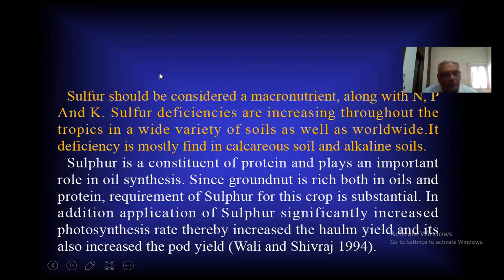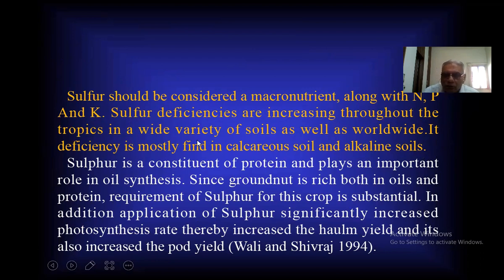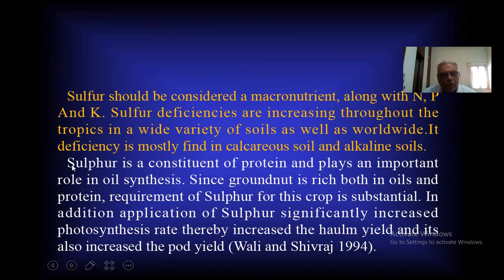The second nutrient is sulfur. Sulfur should be considered a macronutrient, along with nitrogen and potassium. Sulfur deficiency is increasing throughout the tropics in a wide variety of soils worldwide. Its deficiency is mostly found in calcareous and alkaline soils. In Gujarat, in the Saurashtra area, the soil is calcareous type, which is why the productivity of groundnut is lower. Sulfur is a constituent of protein and plays an important role in oil synthesis. Since groundnut is rich in both oil and protein, the requirement of sulfur for this crop is substantial.